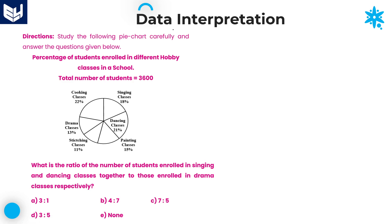Hi everyone, welcome to the session. In this session I am continuing pie chart data interpretation. First, read the information carefully and then solve the questions accordingly. The pie chart shows the percentage of students enrolled in different hobby classes in a school. The total number of students in the school is 3600.